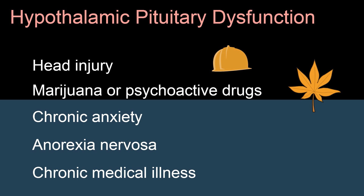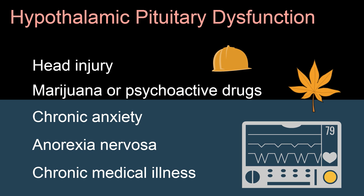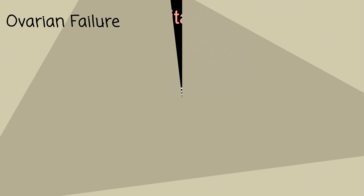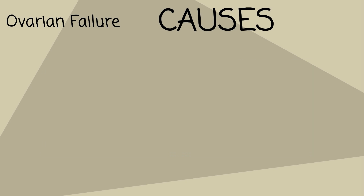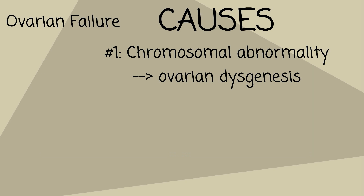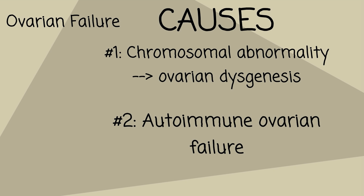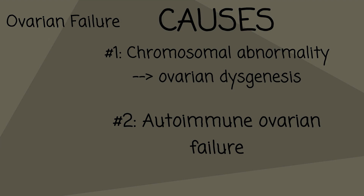Another cause of amenorrhea is ovarian failure. Ovarian failure occurs when the ovaries are exhausted or are resistant to FSH and LH. The most common causes of ovarian failure are chromosomal abnormalities such as Turner syndrome, which lead to ovarian dysgenesis, or autoimmune ovarian failure.